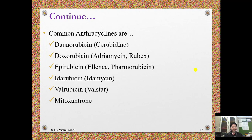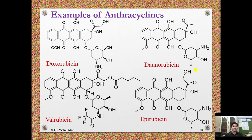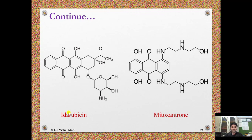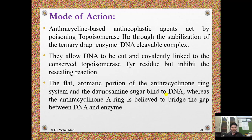The common anthracyclines are daunorubicin, doxorubicin, epirubicin, idarubicin, valrubicin, and mitoxantrone. Doxorubicin, daunorubicin, valrubicin, epirubicin, and idarubicin belong to the anthracycline class, while mitoxantrone belongs to the anthracenedione class because it lacks the glycone portion.